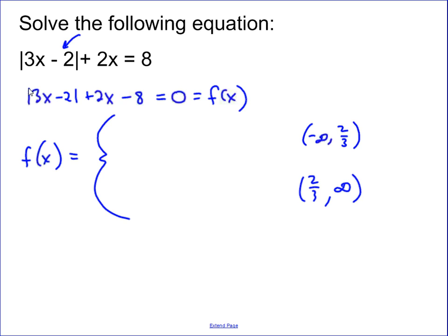Those are our intervals that we're going to consider for this problem. What we do is decide is 3x minus 2 positive or negative over each individual interval. From negative infinity to 2 thirds, if you pick any value in that interval, like 0, let's say,